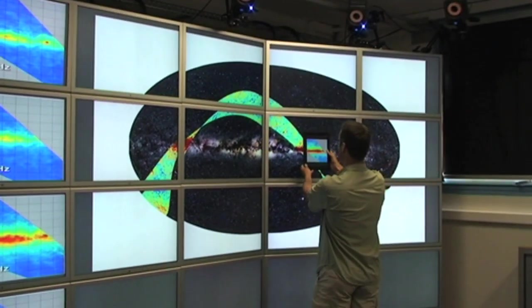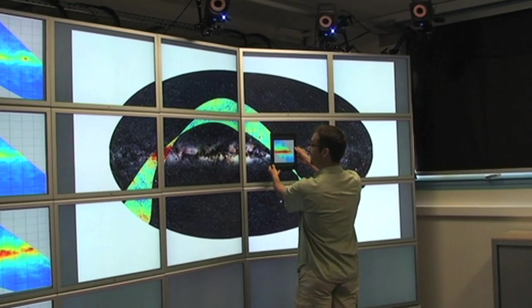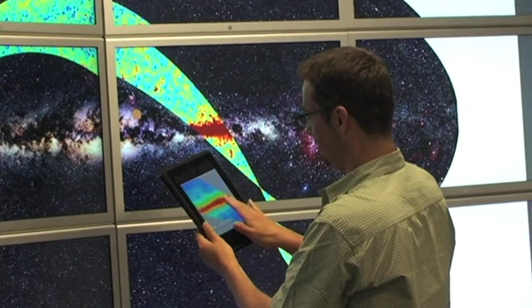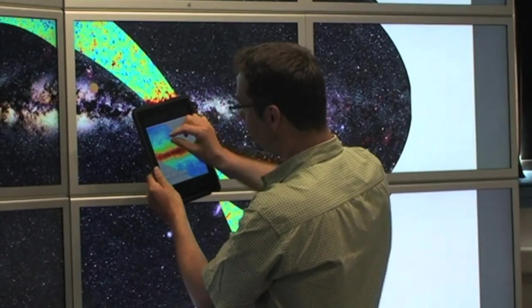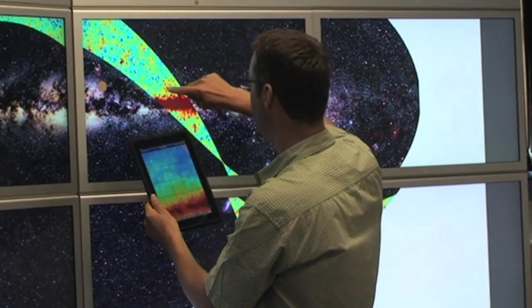For example, one astrophysicist suggested using an iPad as an interactive lens for shifting through different wavelengths of light in a vast image of the Milky Way galaxy.